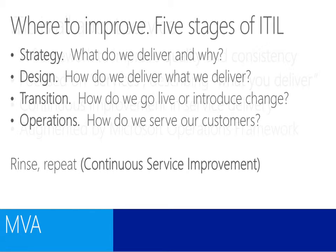First, where do we want to improve? ITIL is broken up into five key stages in its cyclical design. The first thing we're really interested in is: what do we even want to deliver? If you were starting a company from scratch, there's a certain quantity of things you're going to deliver to your customers — device services, email services, instant messaging services, maybe marketing services. As your company asks you to help deliver services better, they'll ask for more things, like an ordering website or tablet applications for salespeople.